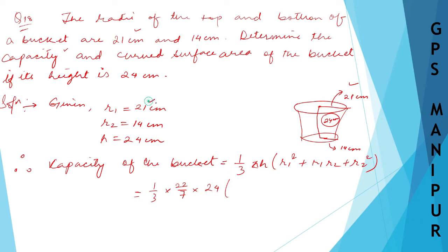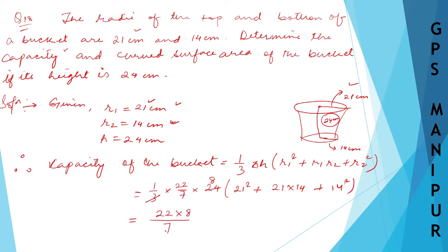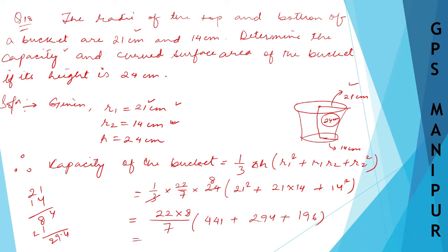Substituting values: r1² = 21² = 441, r1 × r2 = 21 × 14 = 294, and r2² = 14² = 196. Adding these three: 441 + 294 + 196 = 931.